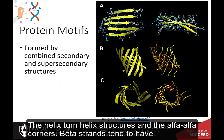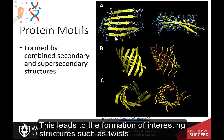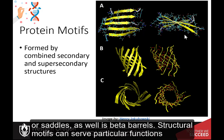Beta strands tend to twist in the right-hand direction to help minimize conformational energy. This leads to the formation of interesting structures, such as twists or saddles, as well as beta barrels.